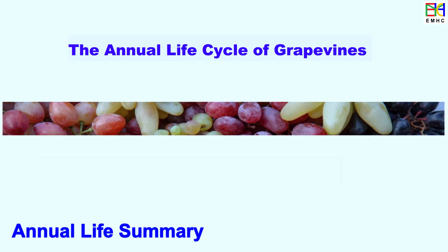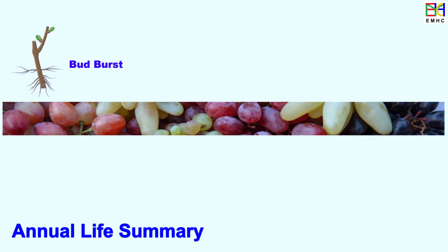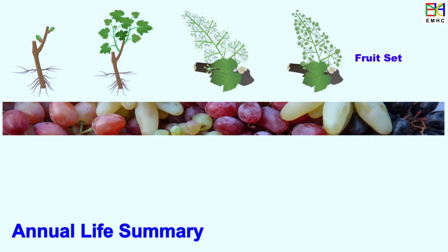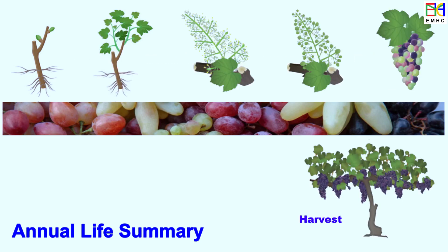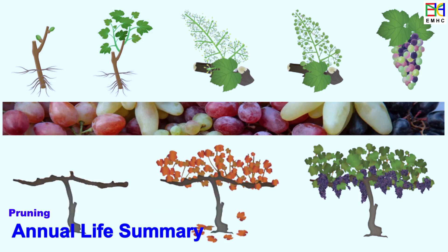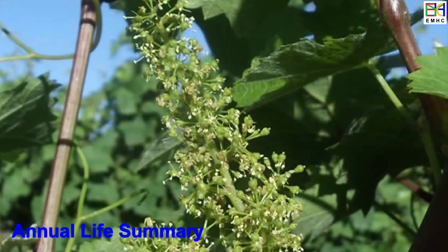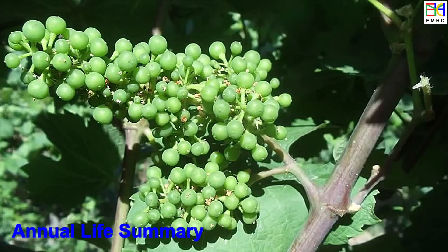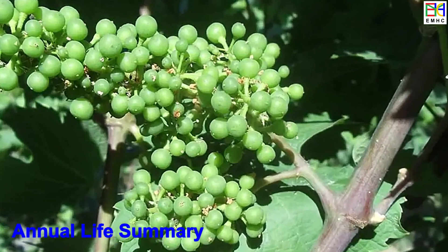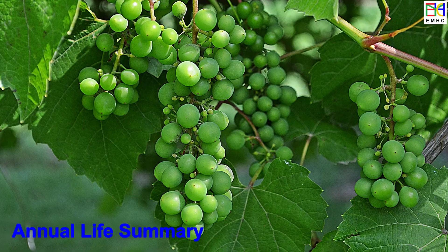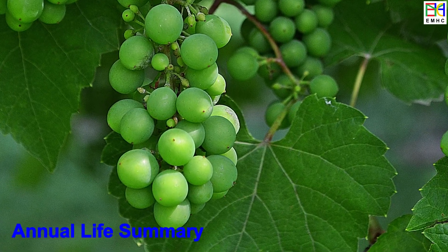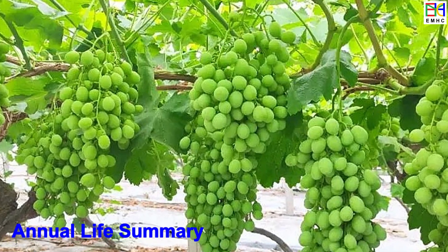The annual life cycle of grapevines can be divided into the following growth stages: bud burst, shoot and leaf growth, flowering, fruit or berry set, veraison, harvesting, dormancy, and pruning. The amount of time spent at each stage depends on a number of factors, most notably the type of climate — warm or cool — and the characteristics of the grape variety. Each stage is crucial for grape growth and production.